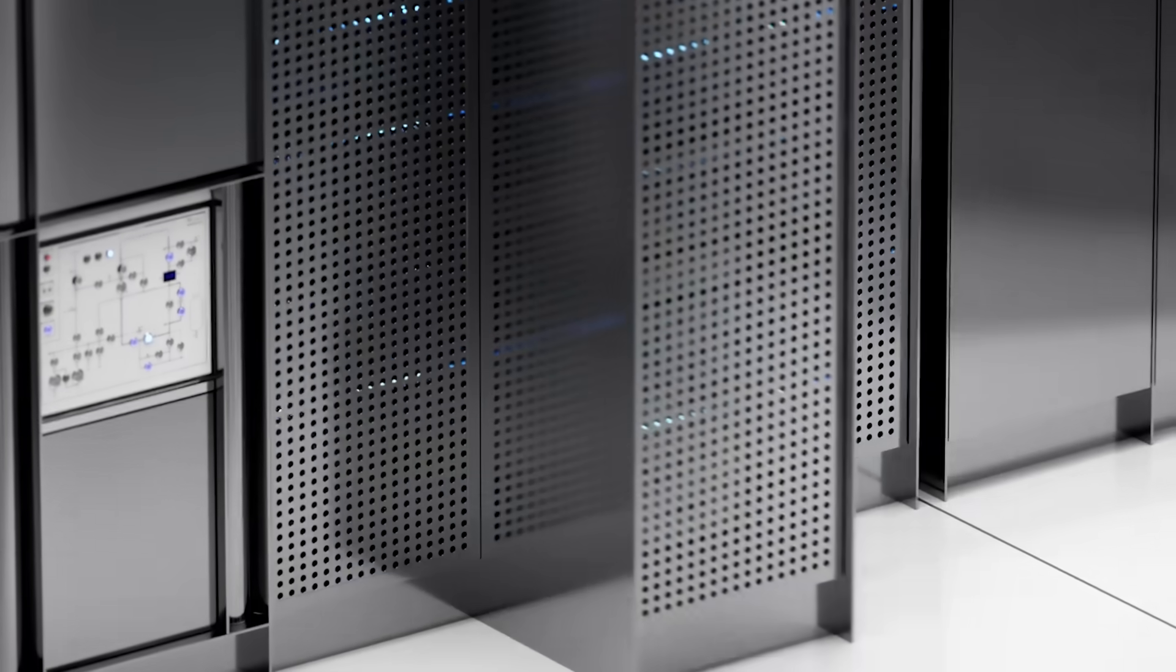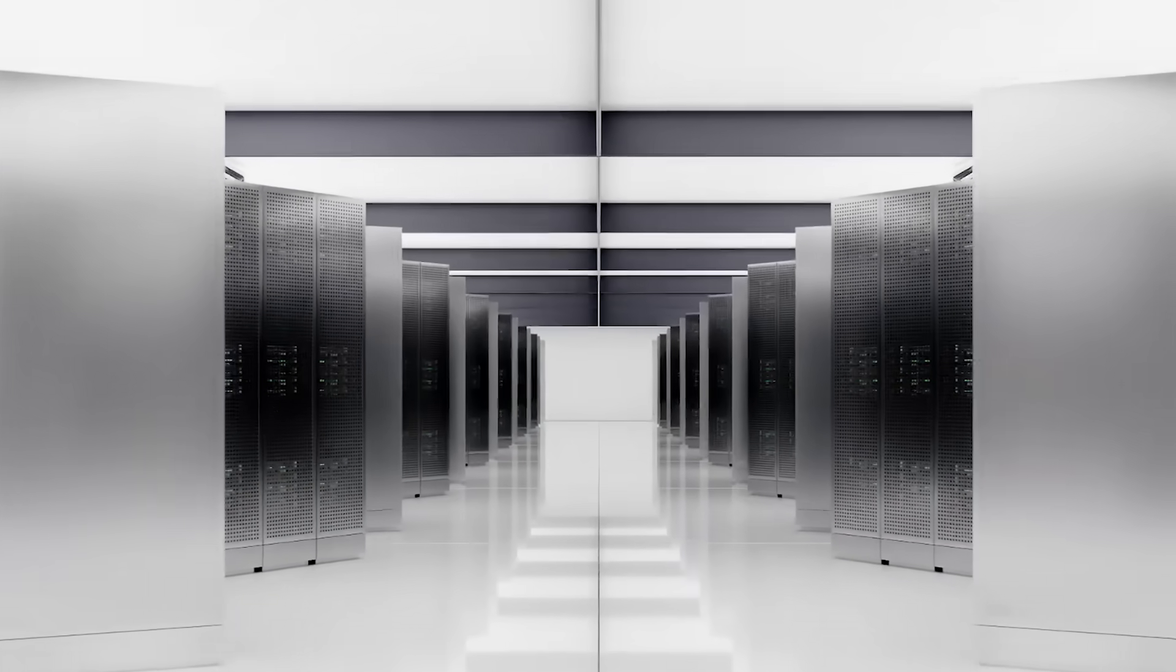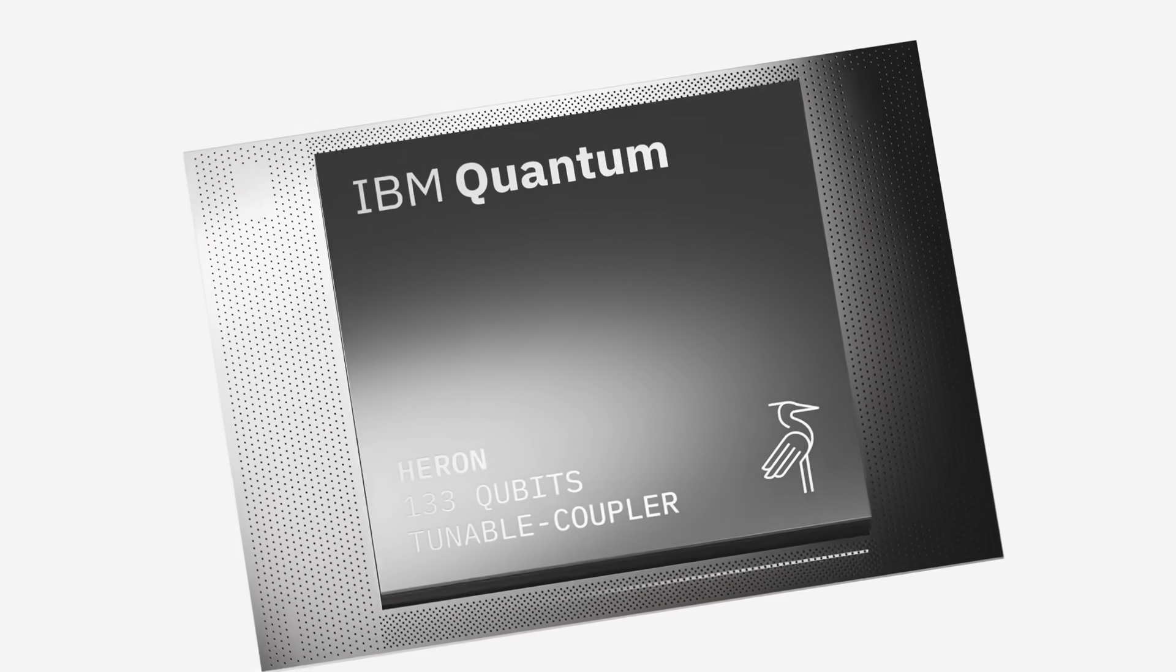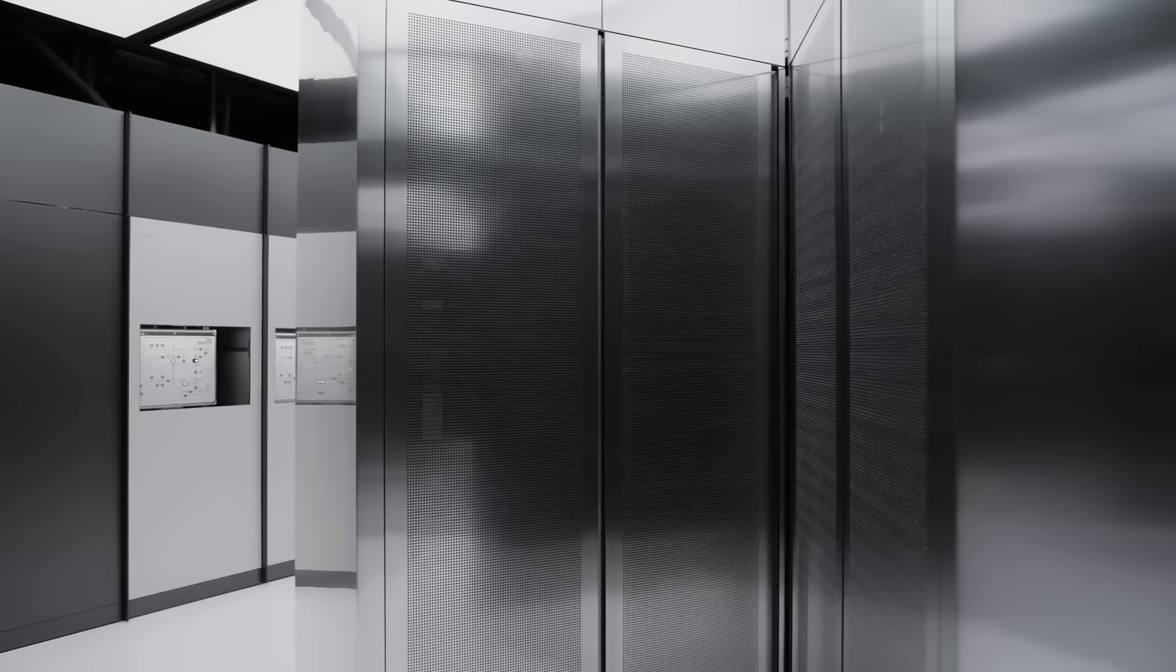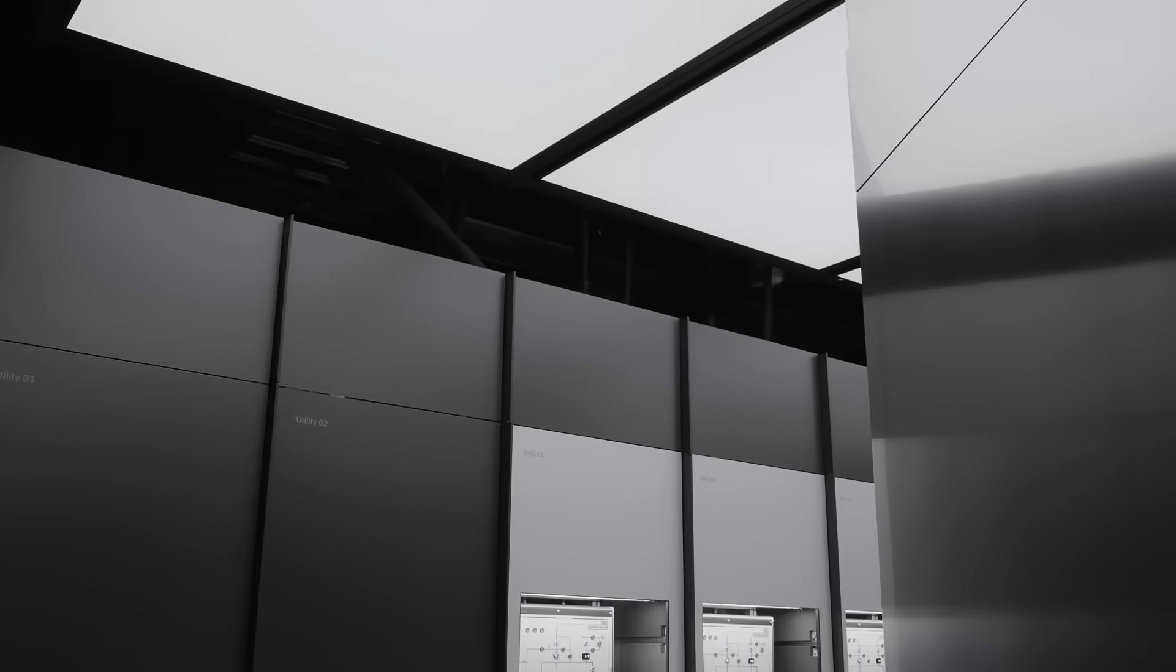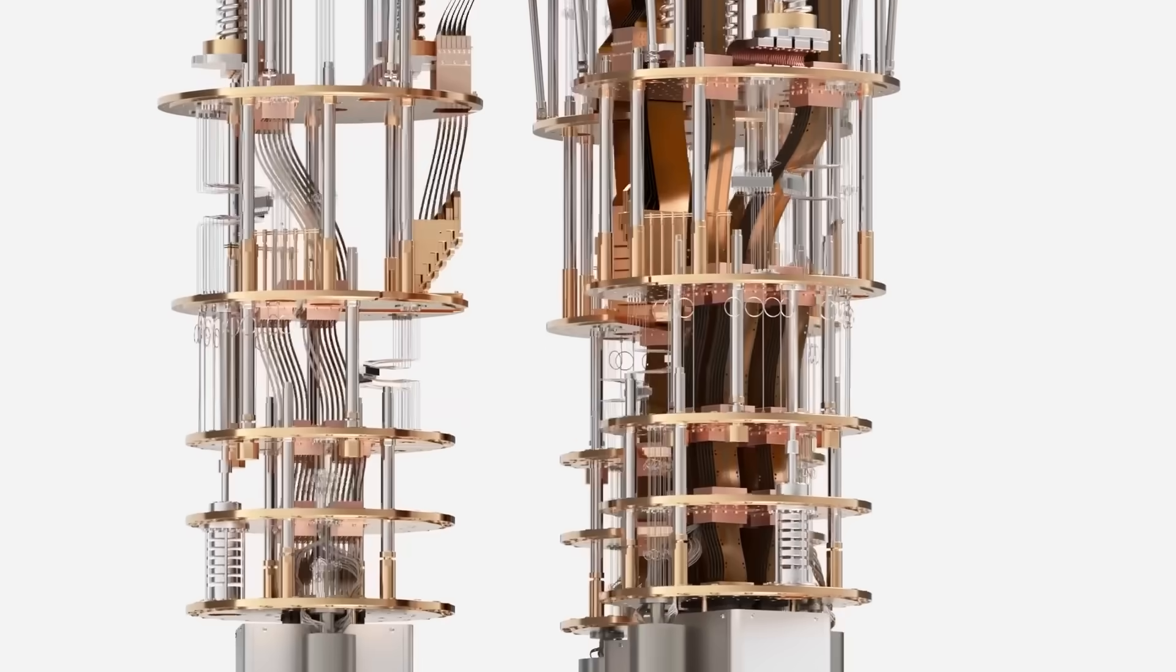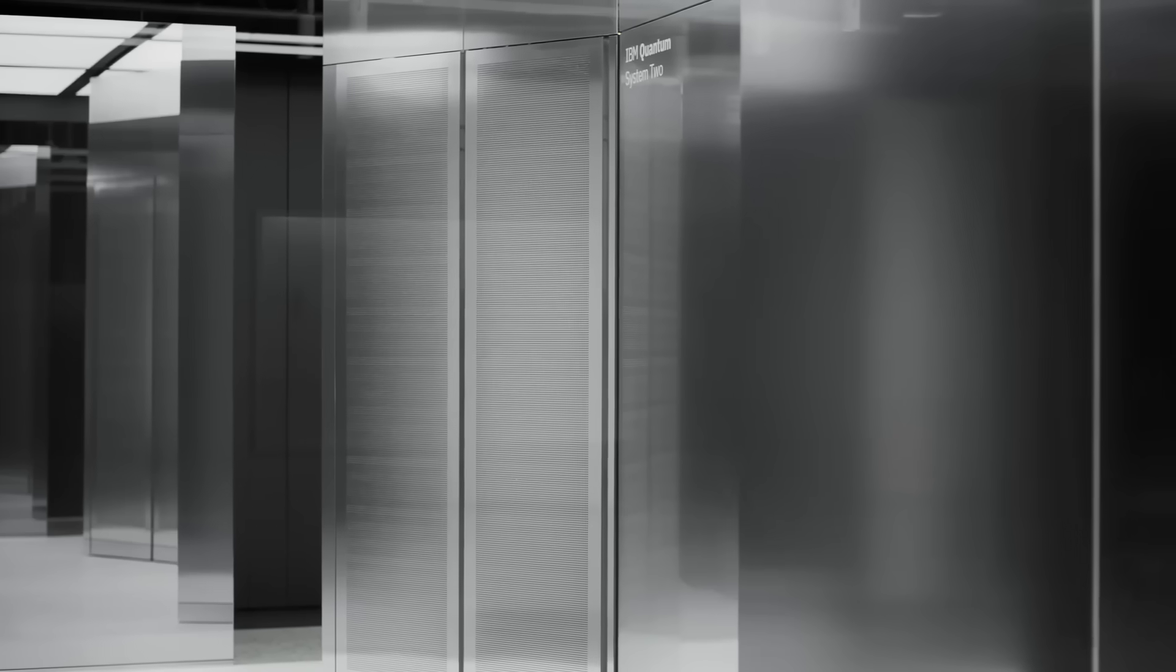In late 2024 and early 2025, IBM began linking Heron processors inside the system, letting chips share control electronics and runtime software. It's not a giant quantum supercomputer yet, but the design looks like a real facility instead of a lab demo. The system is meant to scale over time, adding more hardware modules as chips improve. It's one of the first attempts to turn quantum hardware into something that operates like an actual computing cluster, not a single experimental device.